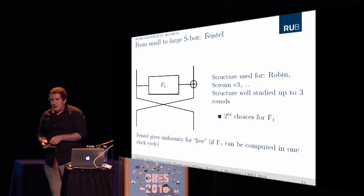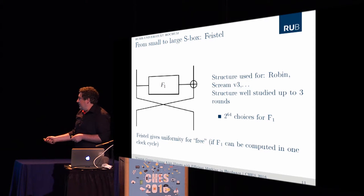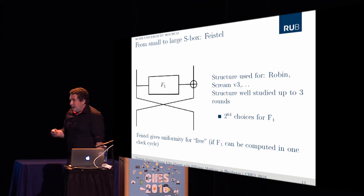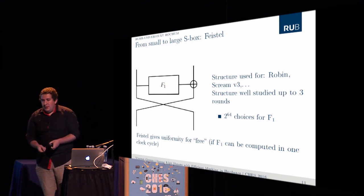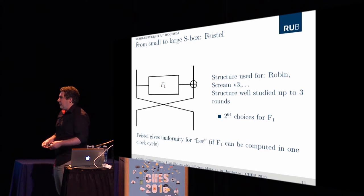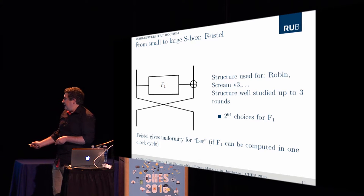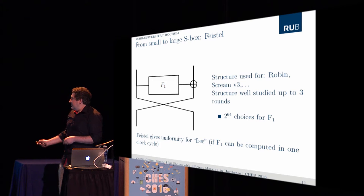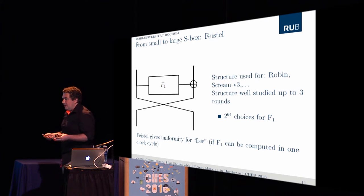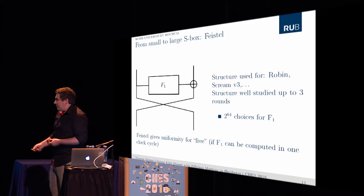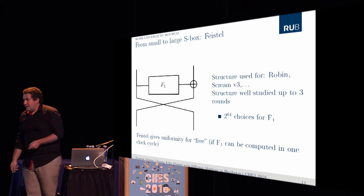That is Feistel network. So Feistel network, we just have one function, and each input is four bits. This is a structure used for Robin and SCREAM in particular. There is some mathematical proof on the bound of cryptographic results we can obtain up to three rounds. So we know what we can have, but if we do more rounds, maybe we can have better results. To remark about Feistel networks, the first one is that whatever the function is, even if it's not a permutation, due to the Feistel structure I will obtain a permutation. The second remark is that as I XOR the right input to the output of my function f1, if I can compute f1 in the threshold manner in one cycle, I will obtain automatically a uniform sharing on the eight bits, and that gives us uniformity for free.